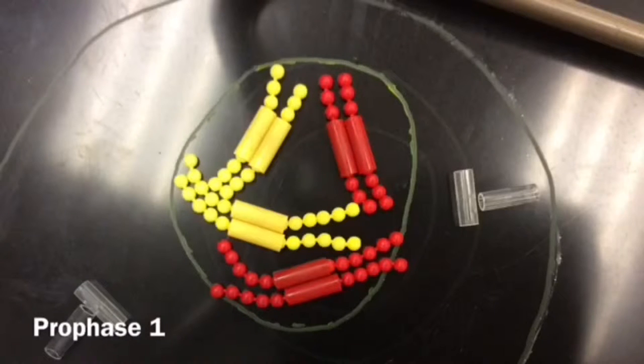In prophase, the chromosomes condense into chromatids, making them visible. The nuclear envelope starts to disappear. When the chromatids pair up, sometimes they cross over. Also in this phase, the centrals move to opposite poles.